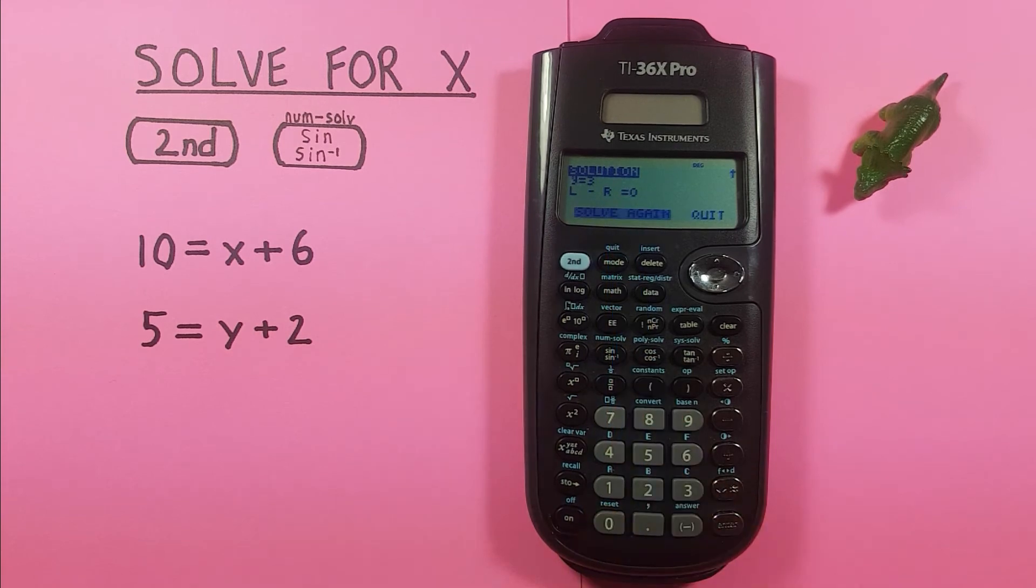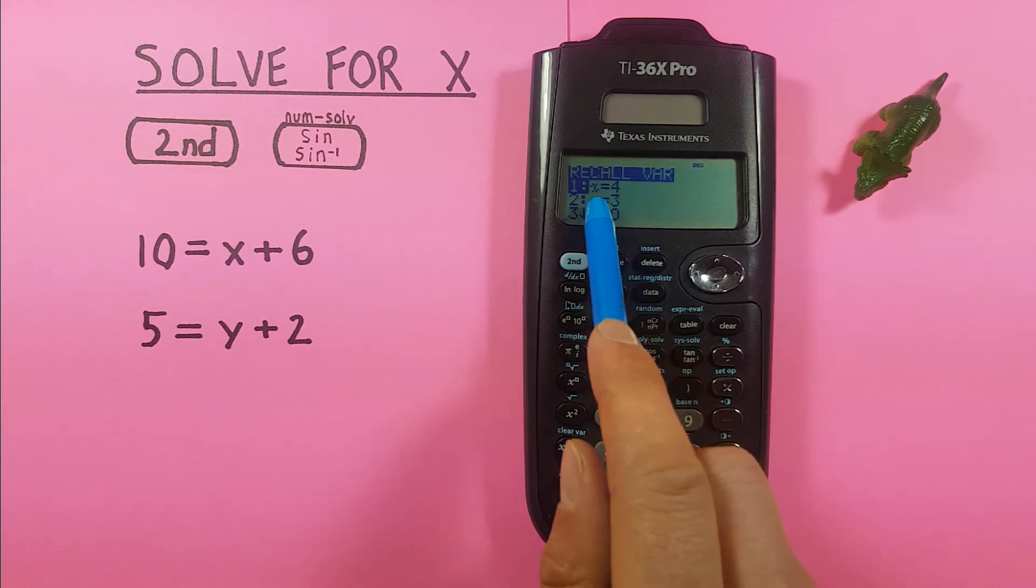Yep, that looks good. So we can quit out of that. Let's check our variables again. If we go second, recall. Yep, we have that 3 stored in there now.